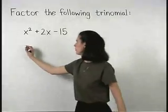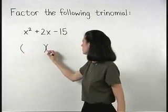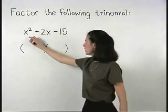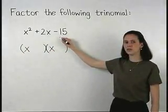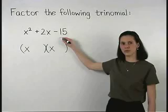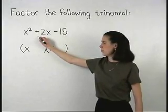Setting up our two sets of parentheses, x squared factors as x times x, and we're looking for the factors of negative 15 that add to positive 2.